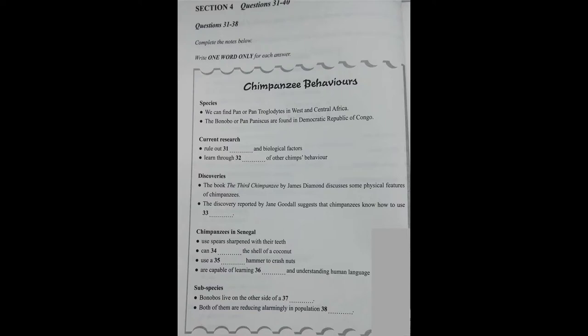Now listen carefully and answer questions 31 to 40. Welcome back to my series of short lectures on apes. Today we will examine recent and historical breakthroughs on the behaviour of chimpanzees, otherwise known as chimps. The word chimpanzee is an umbrella term for two different species of apes, in the genus Pan, which are the common chimpanzee, or Pan troglodytes, found in western central Africa, and the bonobo, or Pan paniscus, which are found in the forests of the Democratic Republic of the Congo.